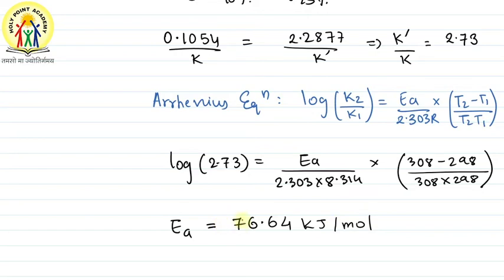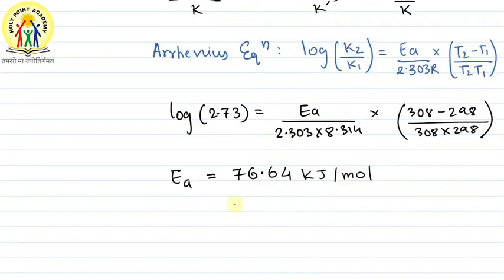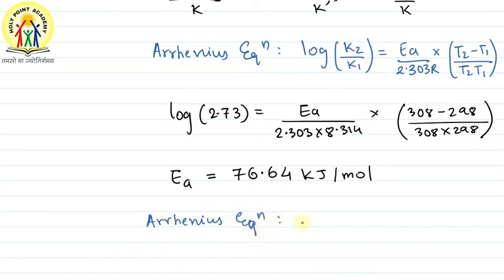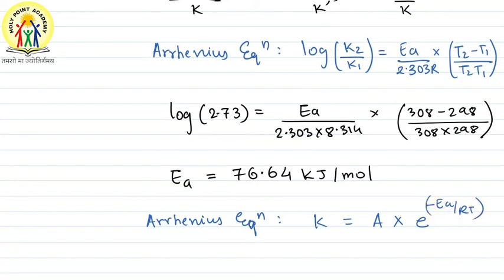The activation energy value comes out to approximately 76.64 kJ/mol. Now the second thing asked was the rate constant at 318 Kelvin. For that, we use the other form of the Arrhenius equation: k = A × e^(−Ea/RT), which gives log k = log A − Ea/(2.303RT).